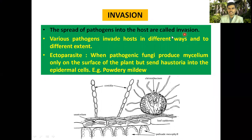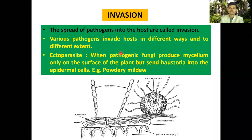The next event of disease development is invasion — the spreading of any kind of pathogen into the host is called invasion. Various pathogens invade the host in different ways. The first mode of invasion is as an ectoparasite — 'ecto' meaning outside — where the pathogenic fungi produce mycelium only on the surface of the plant but send haustoria into the epidermal cells.